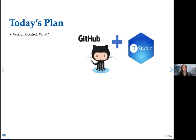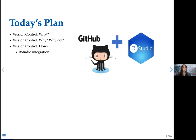The plan for today is we'll first talk about what version control is, then why we should use it and what its benefits are. I'm also open to discussing why we might not want to use version control and its challenges. Then we'll go into the practical part: how to use version control, focusing specifically on the RStudio integration — the relationship between Git, GitHub, and R — without needing the command line.